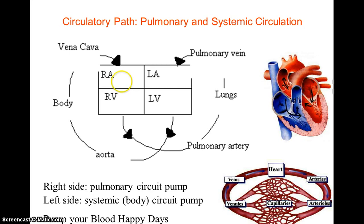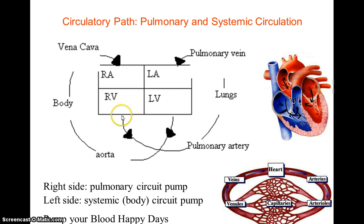Valves help prevent backflow of blood from a ventricle back into an atrium. As blood moves from the right atrium through the tricuspid, it enters the right ventricle, where it will then move away from the heart via an artery.